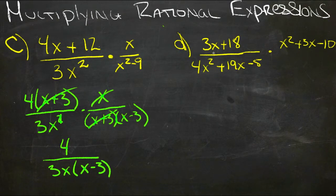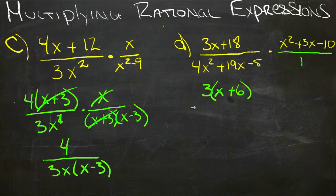And then for our last one, we have 3x plus 18 over 4x squared plus 19x minus 5 times x squared plus 3x minus 10. So this really could be written this way. And we need to factor as much as we can. So we'll pull out the 3 on top. So we'll have 3 times x plus 6 over,